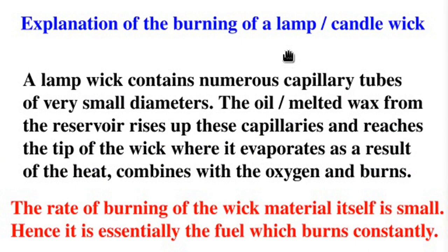The burning of a lamp or candle wick is easily explained in terms of the capillary action. A lamp wick contains numerous capillary tubes of very small diameters. The oil or the melted wax which is the fuel from the reservoir rises up these capillaries and reaches the tip of the wick where it evaporates as a result of the heat and combines with the oxygen and burns. The rate of burning of the wick material itself is quite small. Hence, it is essentially the fuel which burns constantly.